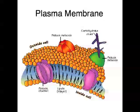On the outer surface of the plasma membrane, antigens protrude. Antigens are substances that enable the immune system to recognise self and non-self cells, meaning the immune system can recognise a foreign cell and attack it, kill it, and get rid of it from your body.